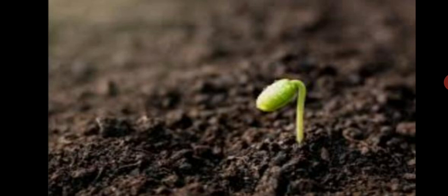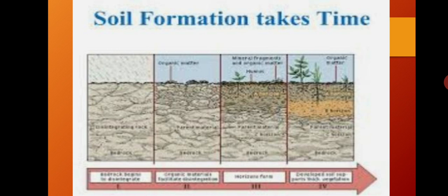The fourth factor is time. Soil formation is a natural and slow process. It needs a very long period of time to form a 2.5 cm thick layer of topsoil — it takes thousands of years. From this, you may understand that soils are invaluable. So, soil formation is a very slow and natural process.